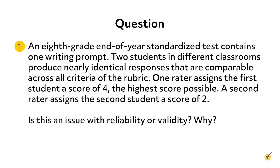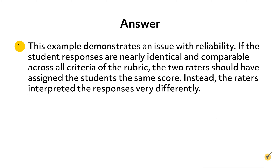Let's cover a couple of review questions before we go. Number one: an eighth grade end-of-year standardized test contains one writing prompt. Two students in different classrooms produce nearly identical responses that are comparable across all criteria of the rubric. One rater assigns the first student a score of four, the highest score possible. A second rater assigns the second student a score of two. Is this an issue with reliability or validity? This example demonstrates an issue with reliability. If the student responses are nearly identical and comparable across all criteria of the rubric, the two raters should have assigned the students the same score. Instead, the raters interpreted the responses very differently.